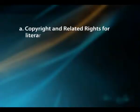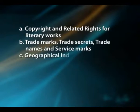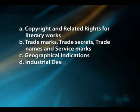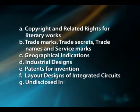The seven types recognized by TRIPS are: copyright and related rights for literary works, trademarks, trade secrets, trade names and service marks, geographical indications, industrial designs, patents for invention, layout designs of integrated circuits, and undisclosed information.